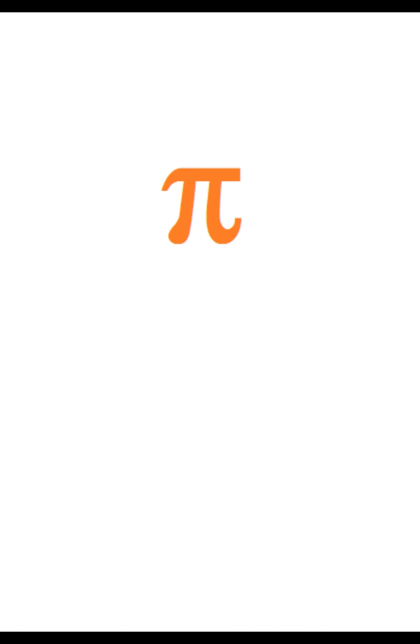The symbol pi itself was first used by the Welsh mathematician William Jones in 1706 and was popularized by the Swiss mathematician Leonard Euler in the 18th century.